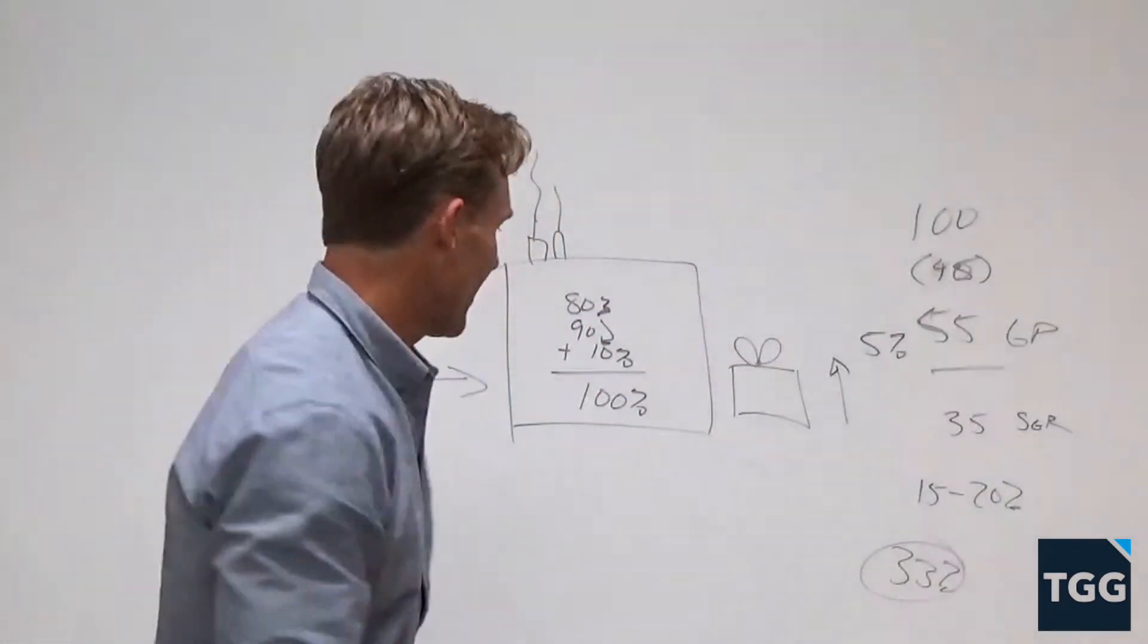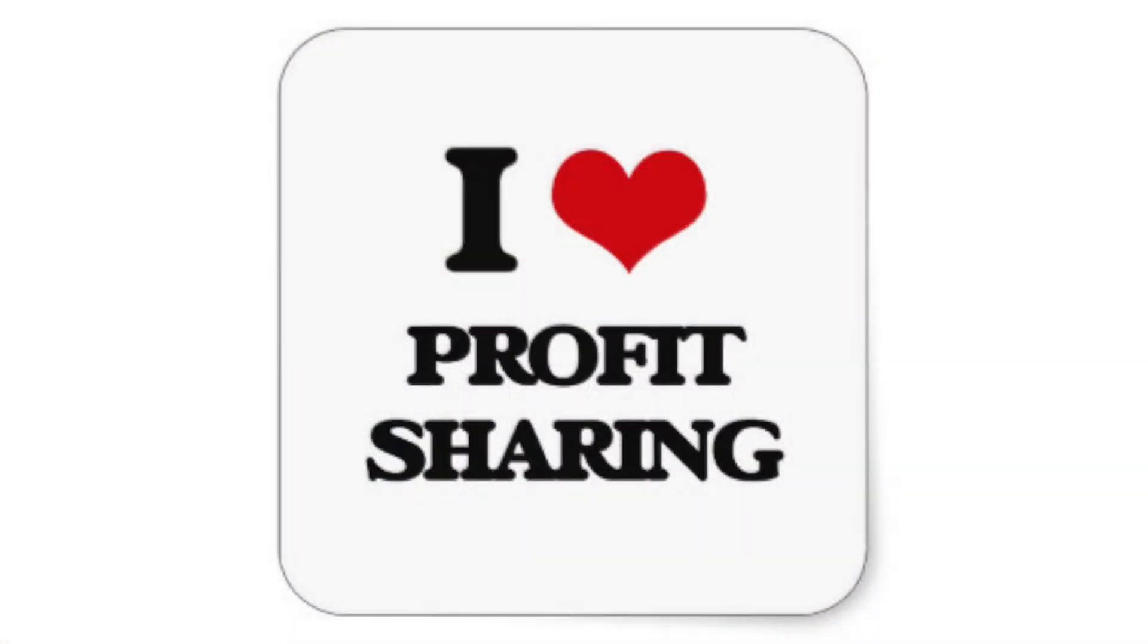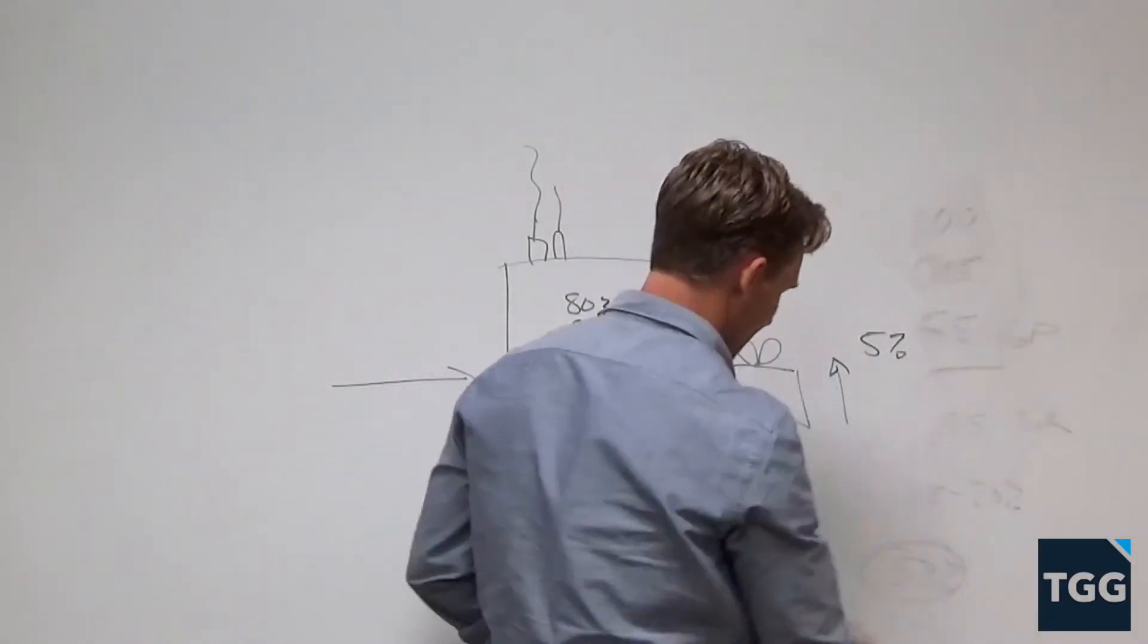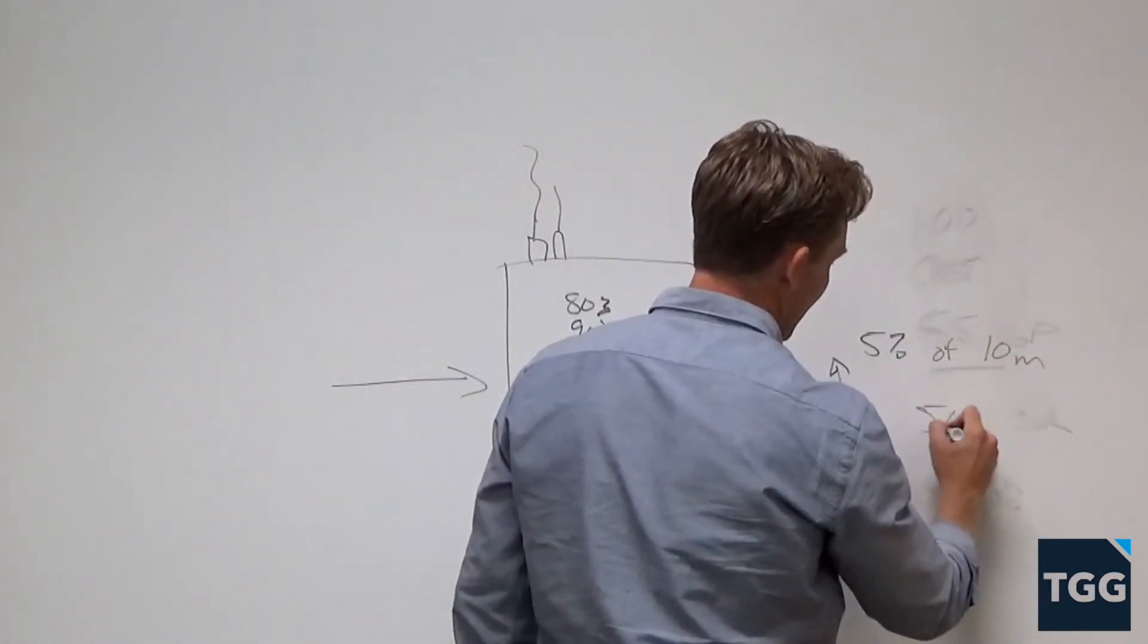The exciting thing here is what can we do to motivate workers to do this? If we have a $10 million business and we've got a 5% increase in our gross margin, how much extra dollars do we have? 5% of $10 million is $500,000.